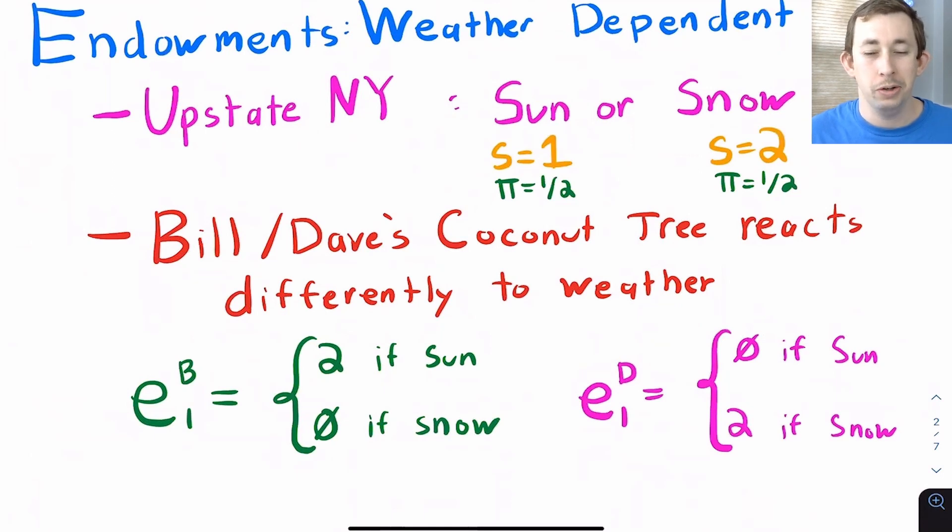So we are in upstate New York, so there are two types of weather. It can be sunny or it can be snowy. Their coconut tree likes either the snowy weather or the warm weather. So for example, Bill's coconut tree only grows coconuts if it's sunny outside.